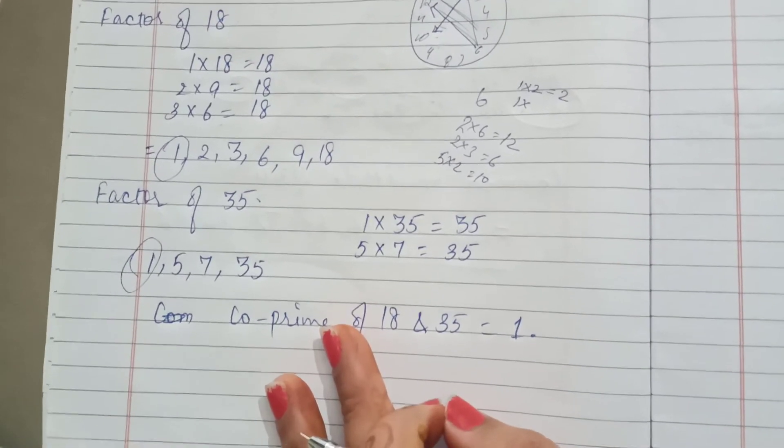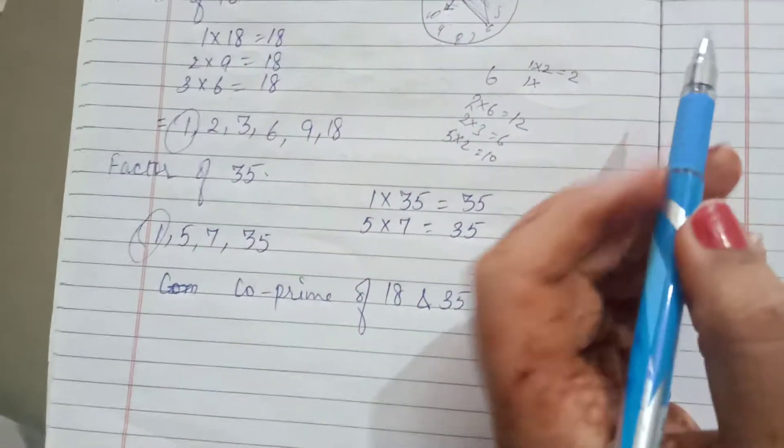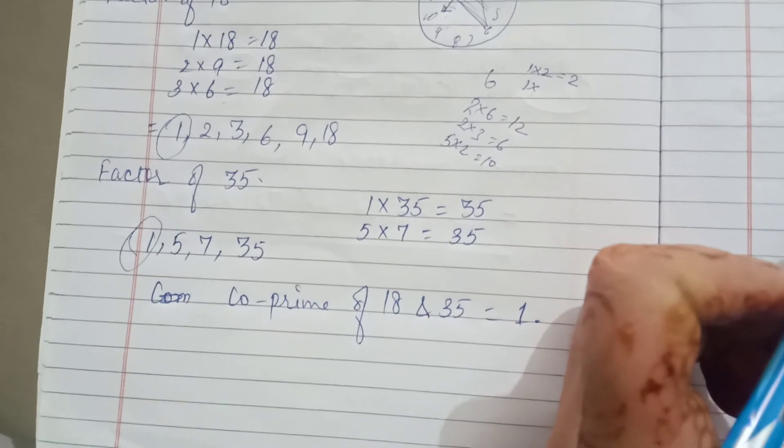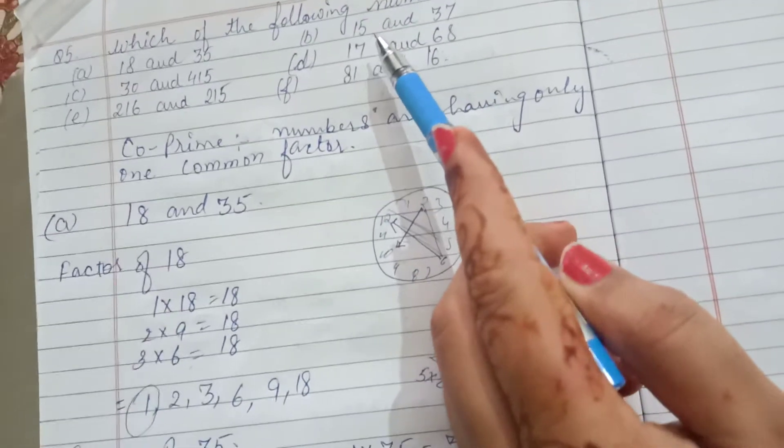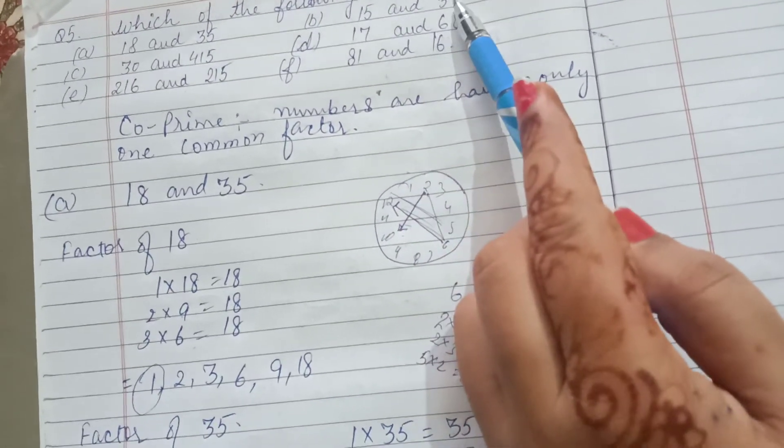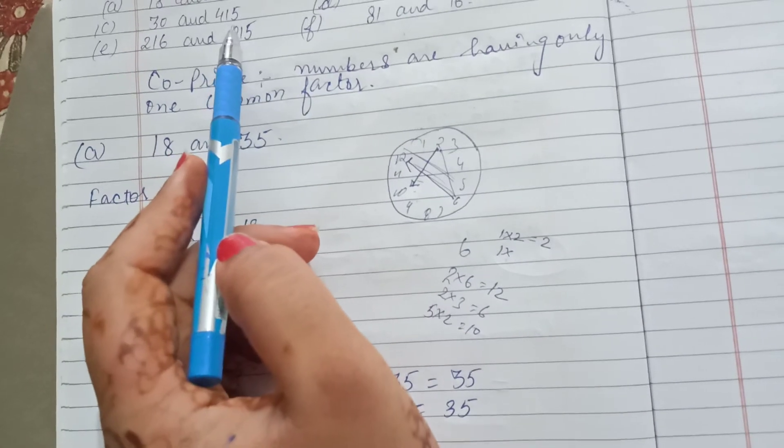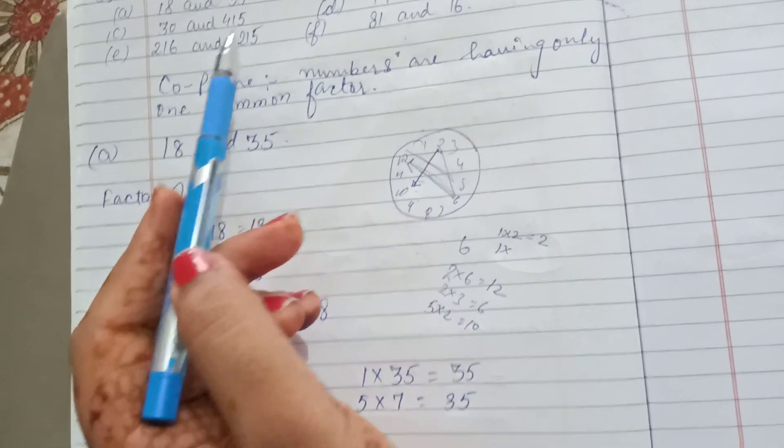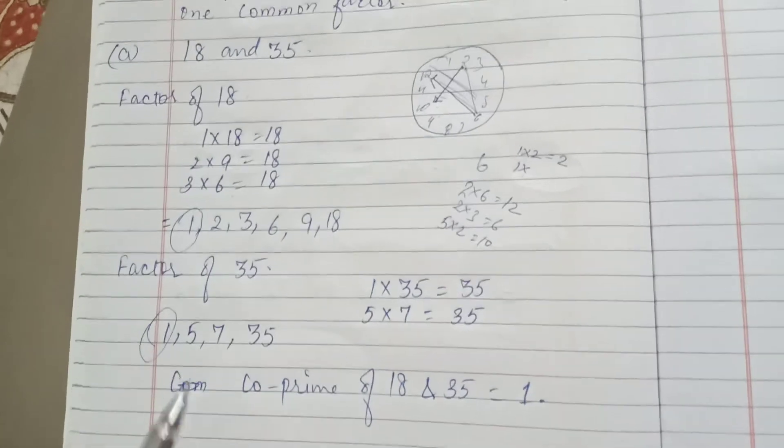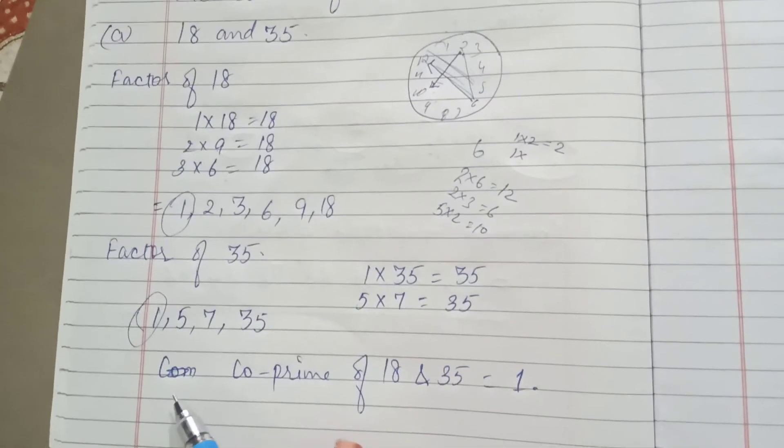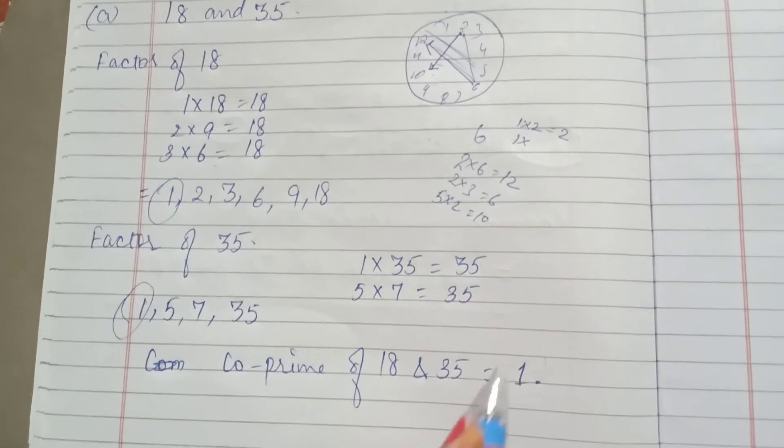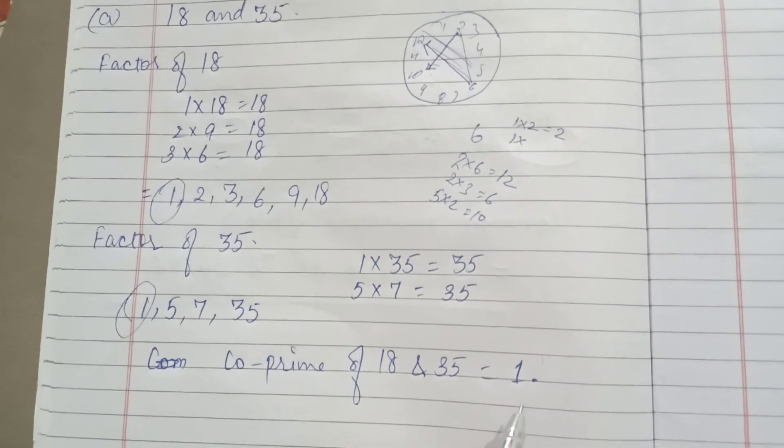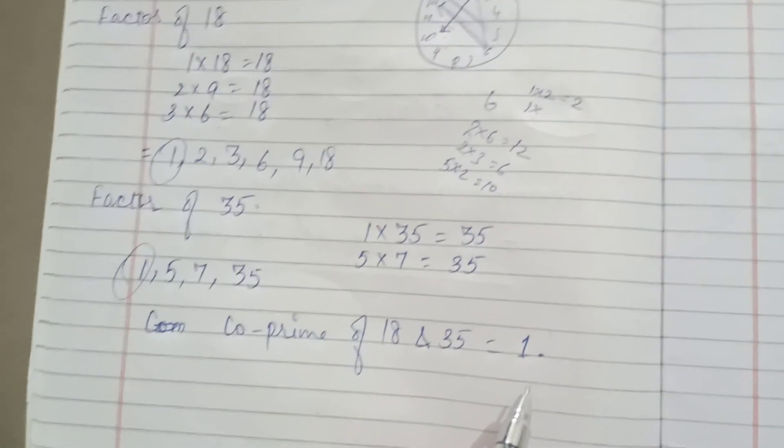Students, you have to try parts B, C, D, E and F. Same method - you have to first write the factors of the numbers given, like 15 and 37, 30 and 415. You make the factors of these. Then, after that, you check if you get only one common factor. One common factor means co-prime, not any other common number. This question is done. Thank you.